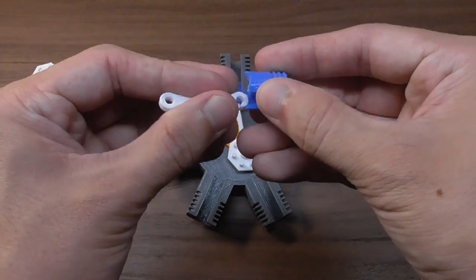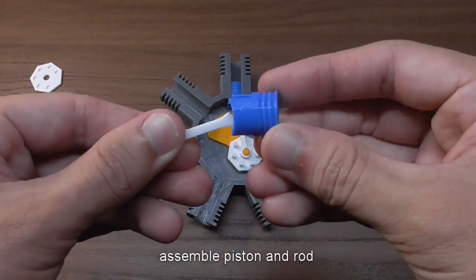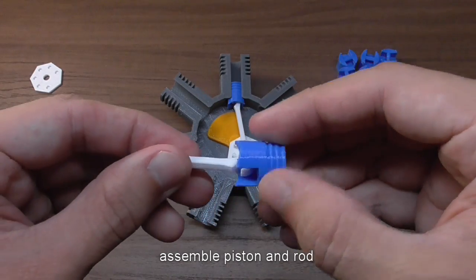Assemble the remaining six pistons. Attach the piston onto the rod. Also, make sure that the link is nice and smooth.